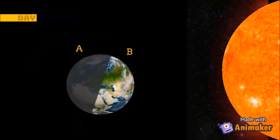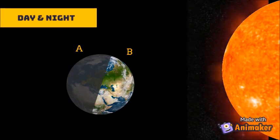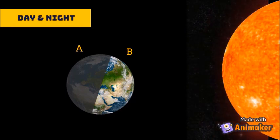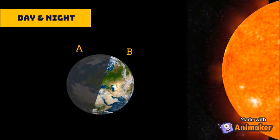Earth's rotation causes day and night. The half of the Earth which is in front of the sun gets all the light, and it is day there.